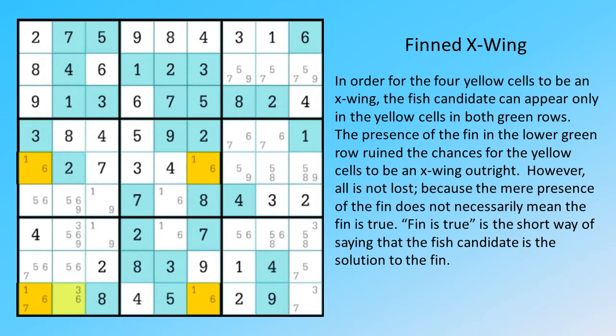In order for the four yellow cells to be an X-Wing, the fish candidate can appear only in the yellow cells in both green rows. The presence of the fin in the lower green row ruined the chances for the yellow cells to be an X-Wing outright.